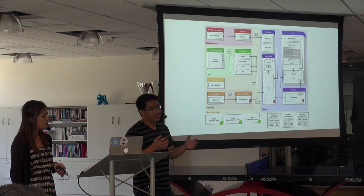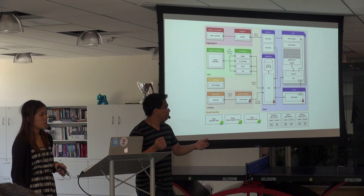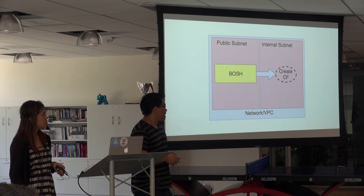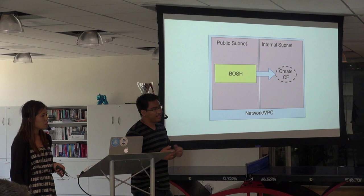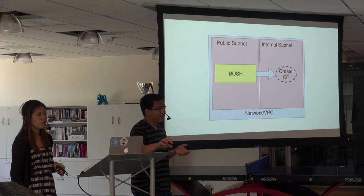The two hiccups that people usually hit are: one, how do you even create a BOSH? Which is essentially like this very simplified diagram. You need a network to house all your VMs and your BOSH, usually split up into two subnets — a public one which you could put your BOSH into, and then an internal subnet that you put your Cloud Foundry into, and BOSH deploys VMs into.